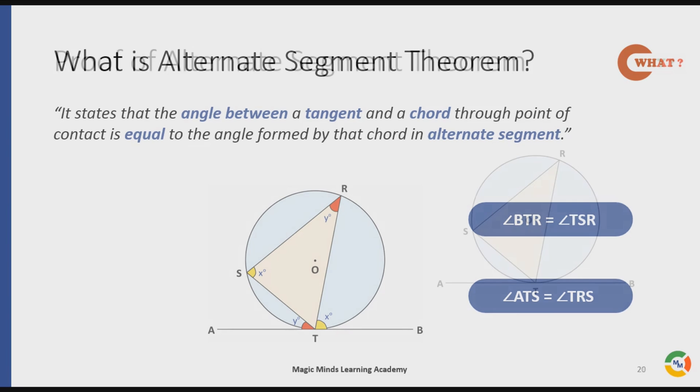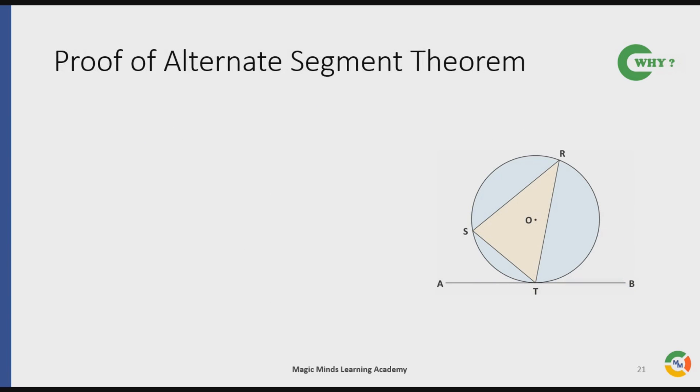Now let's understand the why part of the Alternate Segment Theorem. Let us look at the proof. First we start with a small construction. We will join OT and OR. Notice that we can see a distinct triangle, triangle OTR, that is the one shown in red color here.